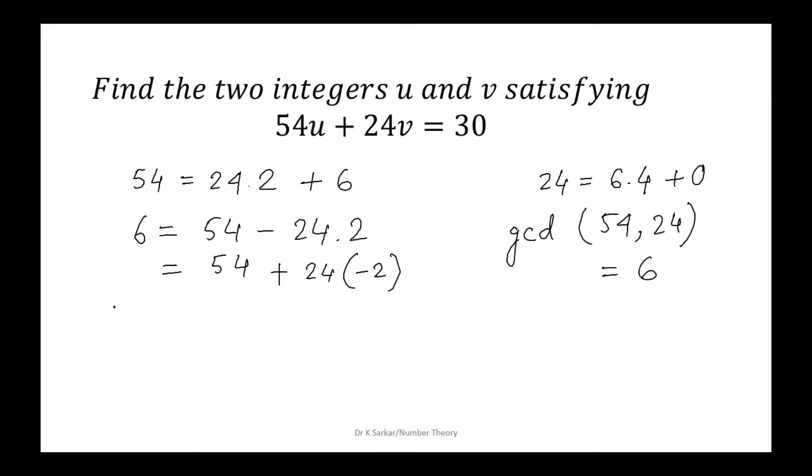Then, we are getting 5 times 6 equals 54 multiplied by 5 plus 24 times negative 2 times 5. So, this is 30 equals 54 times 5 plus 24 times minus 10.